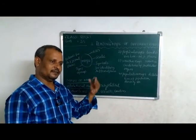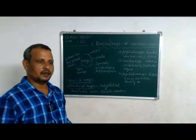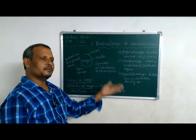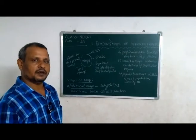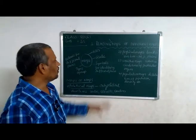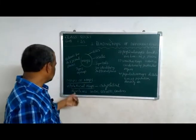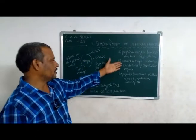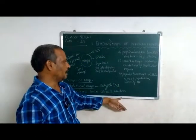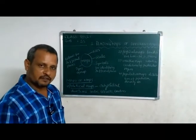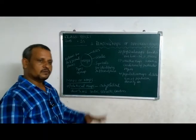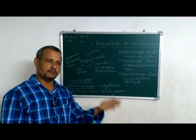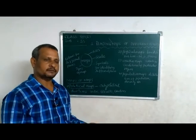The surface of the earth drawn to a scale on a paper or any plane area is called a map. Maps are of different types: political maps, physical maps, weather maps, population maps, relief maps, outline maps — world outline map, India outline map, and AP outline map.